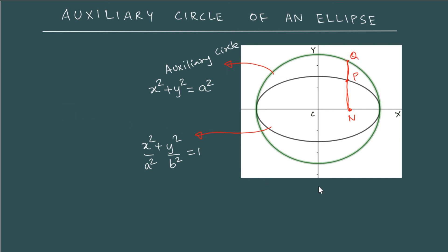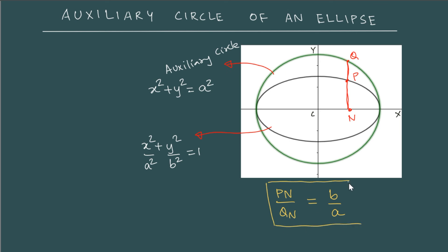The property that is very interesting to note is: if you take the ratio of PN — the y-coordinate of the point on the ellipse — to QN — the y-coordinate on the circle — this ratio is b/a. This is a nice property to keep in mind. It does not matter where you take a point on the axis of the ellipse; if you draw a line perpendicular to the axis, it cuts the ellipse at one point and the circle at another, and the ratio of those y-coordinate values will be b/a.